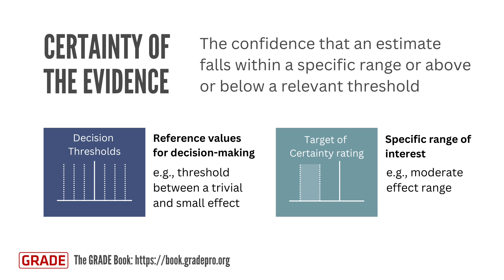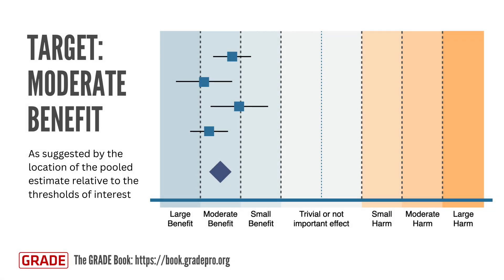The target of the certainty rating refers to the specific range of effect that is being assessed — for example, a moderate benefit. This range typically corresponds to where the pooled estimate from a meta-analysis lies. For example, in this hypothetical meta-analysis, six decision thresholds are considered, distinguishing between trivial or no important effect and also small, moderate, or large benefit or harm. These thresholds will be used to assess the certainty of the evidence.